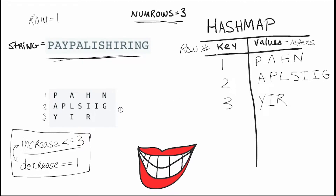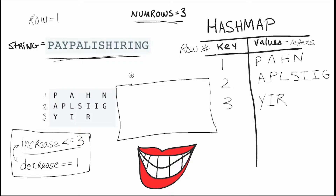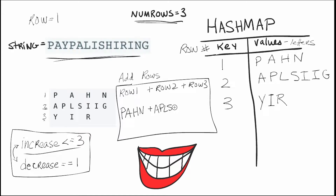To construct our final answer we take every key, so we add row one plus row two plus row three. That gives us P-A-H-N plus A-P-L-S-I-I-G plus Y-I-R, and that produces our answer.